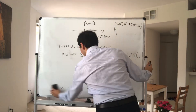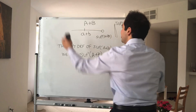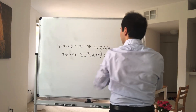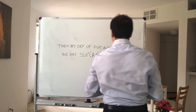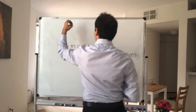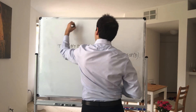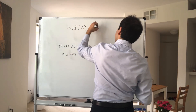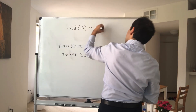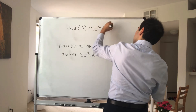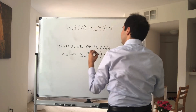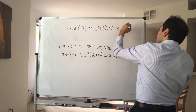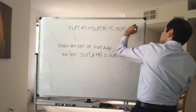Let's start on a new whiteboard and show the other direction: supremum of A plus supremum of B is less than or equal to the supremum of A+B.